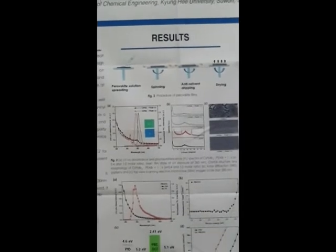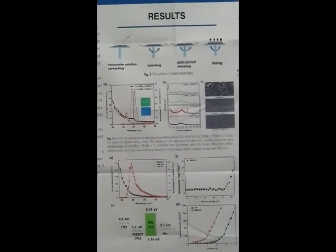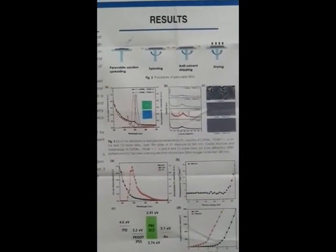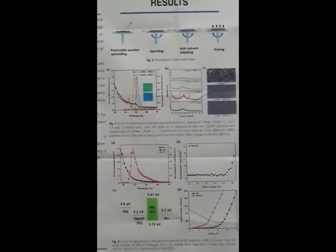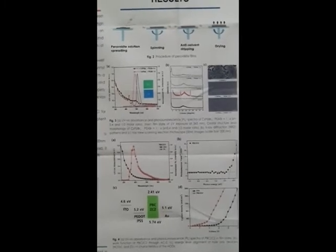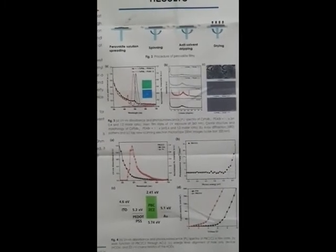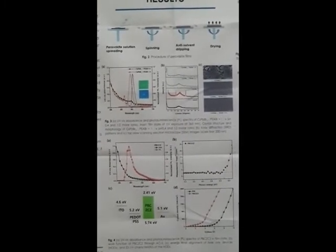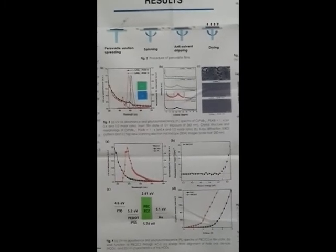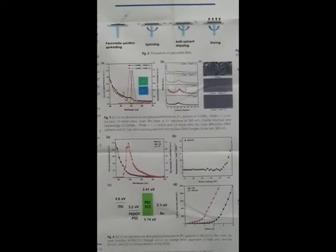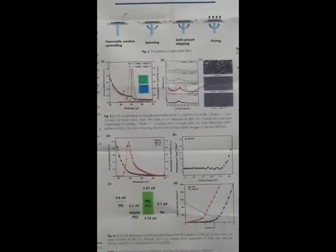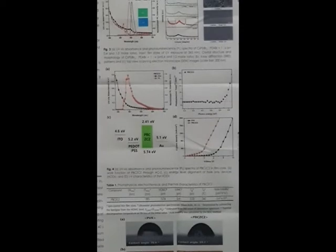Figure 2 shows the procedure of perovskite treatment. Figure 3A shows UV and PL spectra of perovskite blue and green materials. B shows XRD diffraction pattern, and C shows top view SEM image.